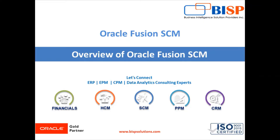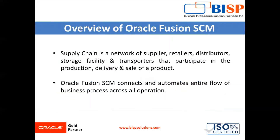You may hear the term Oracle Fusion Supply Chain Management Cloud or Oracle Fusion Cloud Applications — they are pretty much synonymous. Supply chain is a network of suppliers, storage facilities, transporters, retailers, and distributors that participate in the production, delivery, and sale of a product. This means supplier is connected with storage facilities, storage facilities with retailers, and retailers with distributors.